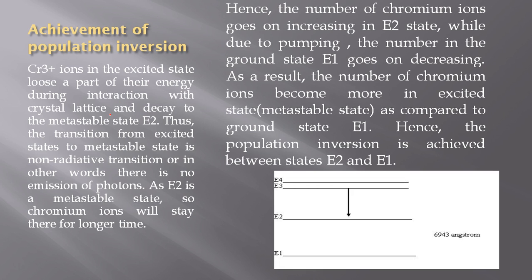Chromium ions in the excited state lose a part of their energy during interaction with the crystal lattice — because ruby is a crystal. The lattice is the smallest portion of the crystal. Due to this interaction, the chromium ions decay to the metastable state E2. The transition from the excited states to the metastable state is a non-radiative transition — meaning there is no emission of photons.